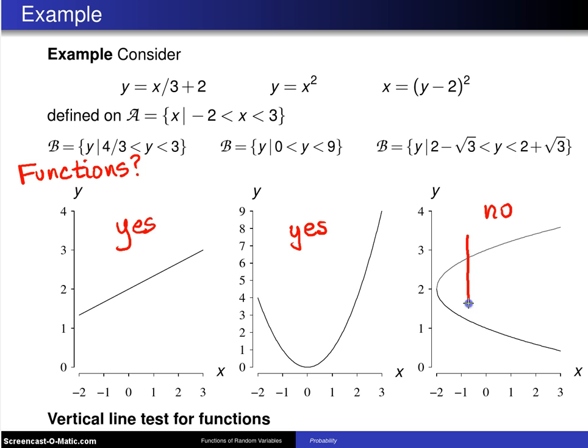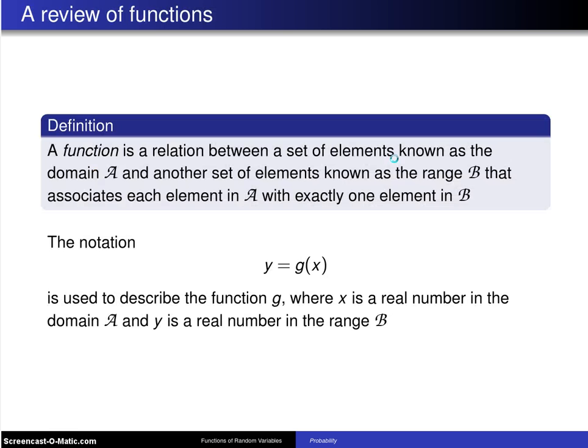If you pick off some value in the domain, and it looks like I've chosen negative 0.9 in this case, that one value in the domain script A maps to two values in the range script B. And because of that, if you go back a slide to the definition of the function,